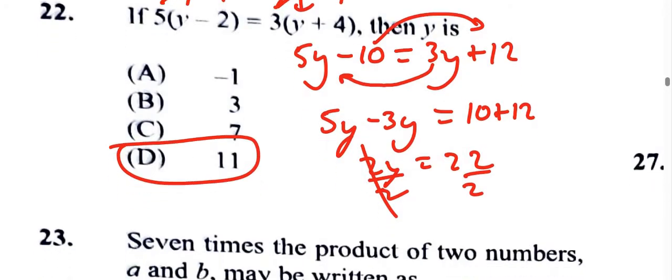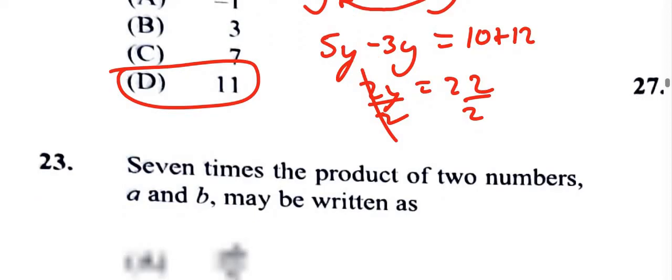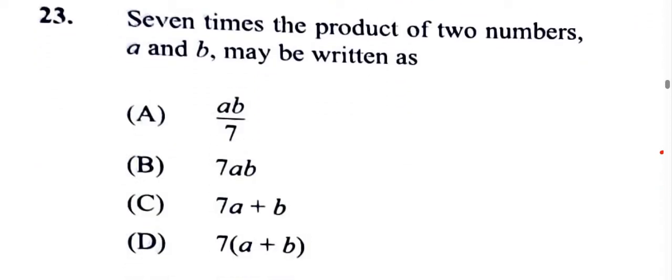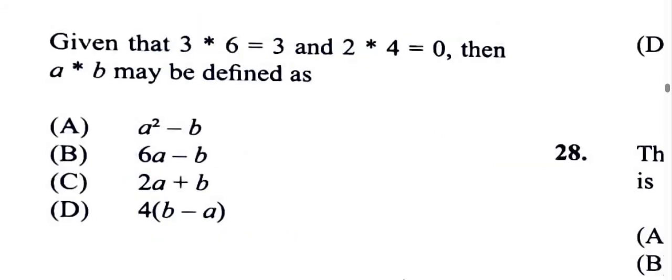Let's look at another question. Seven times the product of two numbers a and b. So seven times the product - what is the product of two numbers a and b? It's a times b. Product means the result of a multiplication, so that's 7ab. Answer is B.